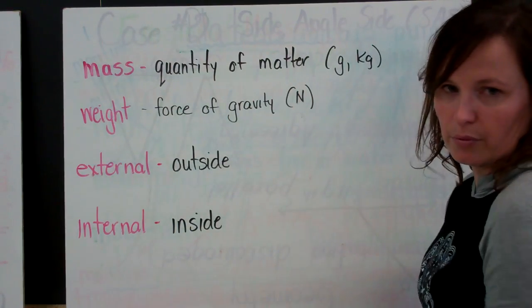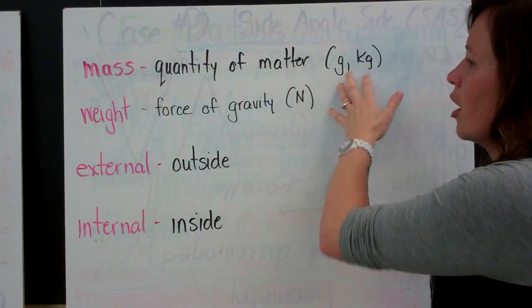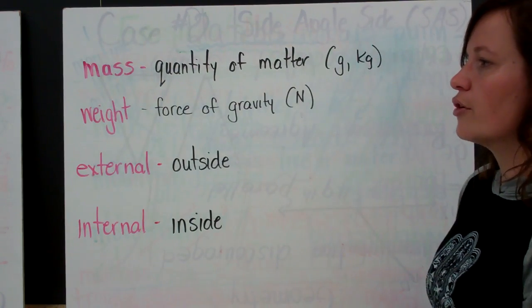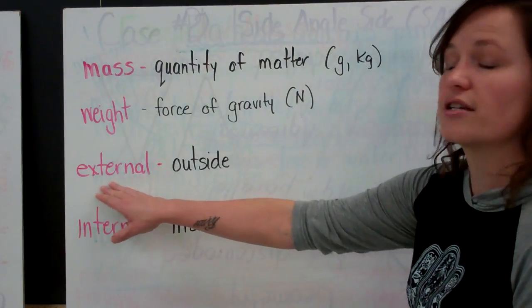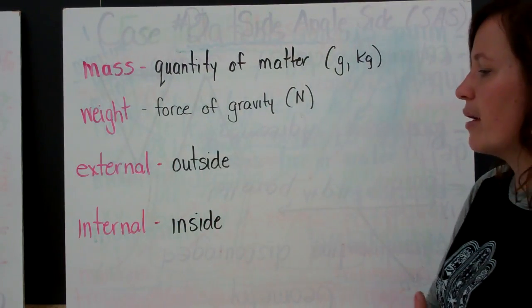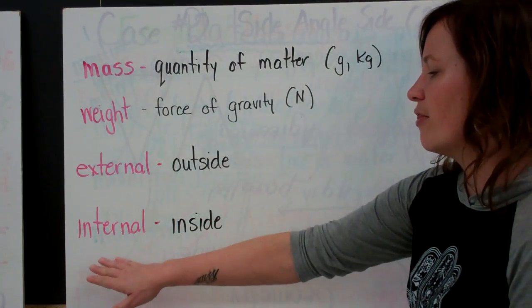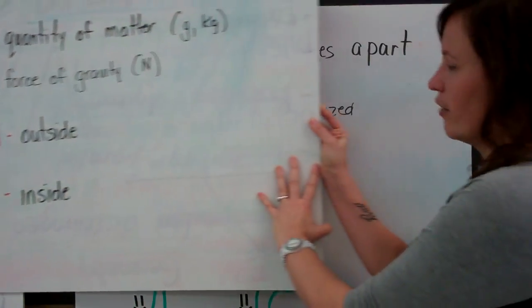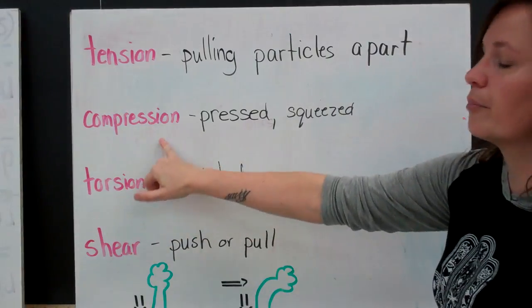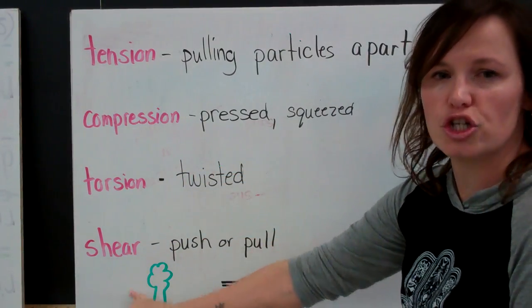We don't generally talk about newtons. We generally talk about our mass. There can also be forces that come from outside of the structure. And they're called external forces. Or they can be coming from within the structure. And those are internal forces. There are four types of internal forces. They are tension, compression, torsion, and shear.